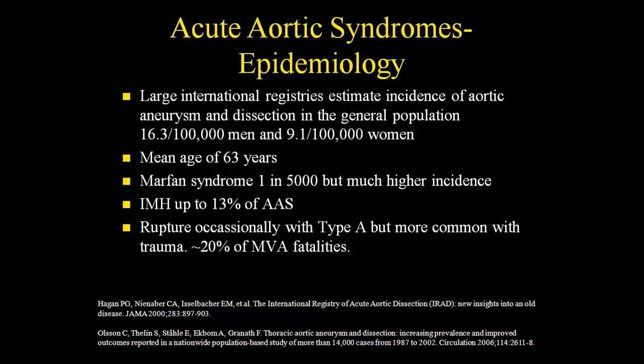The international registry of aortic dissection looked at typical symptoms, patients, and risk factors. The incidence of aortic dissection is about 16 per 100,000 for men and 9 per 100,000 for women. Hypertension and cocaine are major risk factors. Pregnancy is another risk factor — you can have coronary and aortic dissection during pregnancy. The average age is about 63. Marfan syndrome affects about 1 in 5,000 but carries a much higher incidence of aortic dissection.